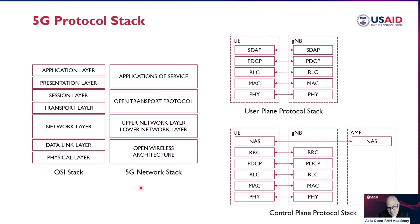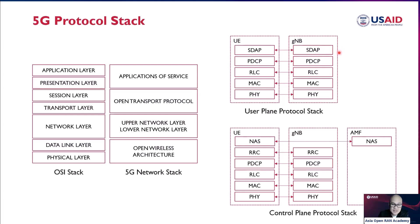If you separate the user plane protocol and the control plane protocol, remember: SDAP, PDCP, RLC, MAC, and physical. It's important to know where these protocols are located in the network layer. The physical, MAC, RLC, and PDCP are the same in both the user plane and control plane protocol. There is an added protocol in 5G — SDAP, the Service Data Adaptation Protocol. And the NAS is for the UE connecting directly to the core network once you establish your connection.